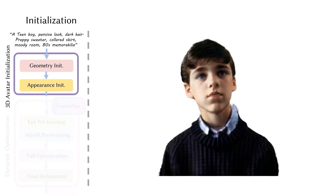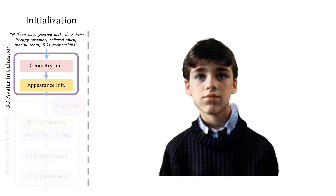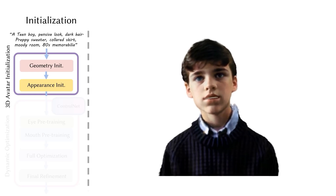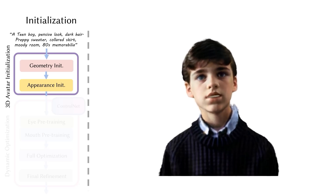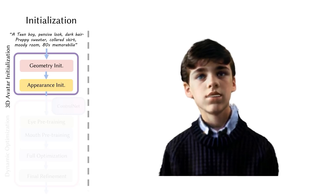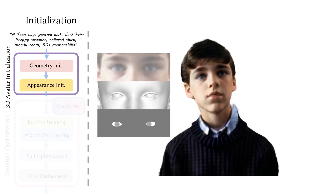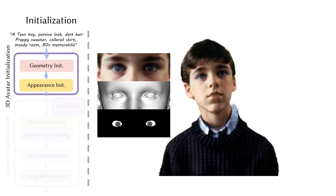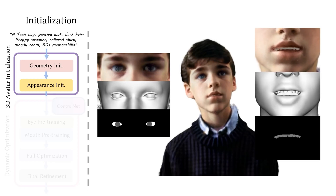After the initialization process, the initial 3DGS animatable avatar achieves a robust appearance and geometry prior with all Gaussians semantically rigged to the SMPLX model. However, the avatar remains blurry and strong artifacts appear with novel expressions. In the zoomed-in view of the eye region, issues such as inaccurate rigging, unrealistic colors, and visible holes can be observed. Similarly, although the teeth are initialized with a generic proxy mesh and color, the interior of the mouth appears unrealistic.